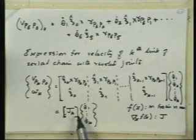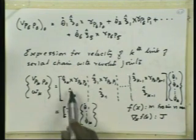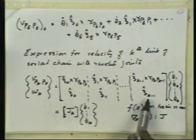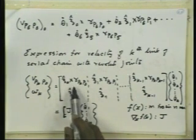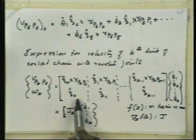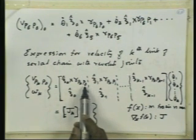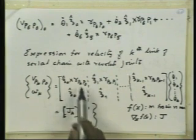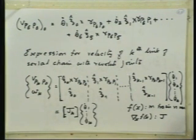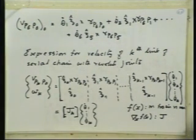The Jacobian J_k corresponding to the kth link consists of columns which are six-dimensional vectors. The two parts of each column are: one, the unit vector along the axis of the joint, and two, the cross product of the joint axis with the vector from the previous link's reference frame to the current link's reference frame origin P_k with respect to P_0, P_k with respect to P_1, and so on.